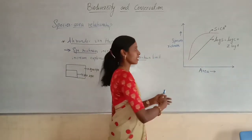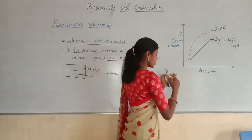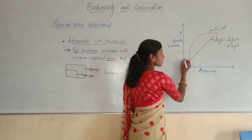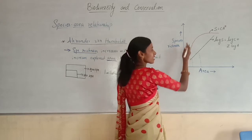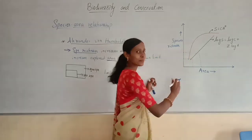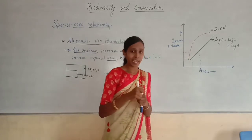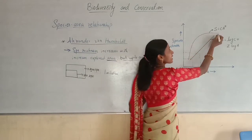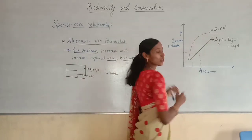Looking at the graph, on the x-axis you have area and on the y-axis species richness. When the area is small, species richness is correspondingly lower. When you increase the land area, species richness is also increasing. The curve you can observe will be increasing. With the increasing area, species richness is also increasing, and this relationship turns out to be a rectangular hyperbola.